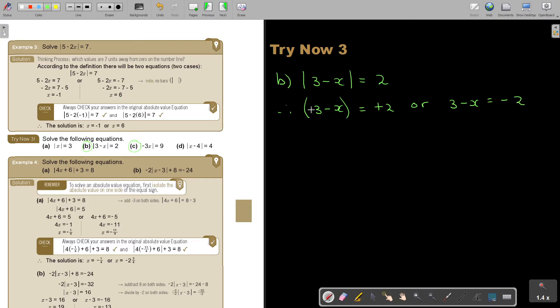Then -X = 2 - 3 or -X = -2 - 3. So -X = -1, therefore X = 1. And -X = -5, therefore X = 5.